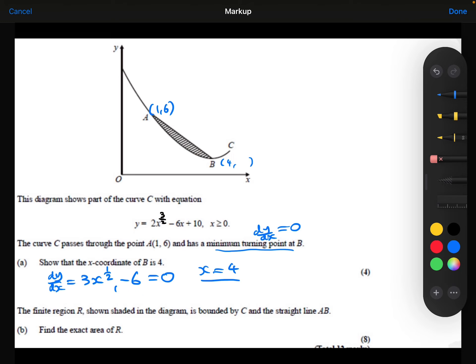Whilst I'm at it, I'm also going to work out the y coordinate of point B. The question doesn't tell me to, but I think I'm going to need it for the next part anyway. So if I take the x coordinate as 4 and substitute it in, 2 times 4 to the power of 3 over 2 minus 6 times 4 plus 10 is 2.